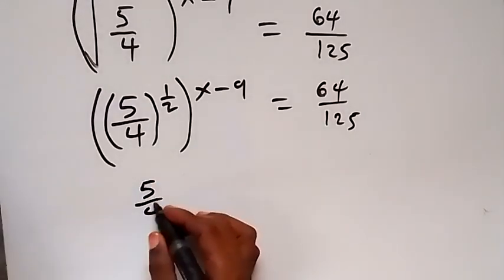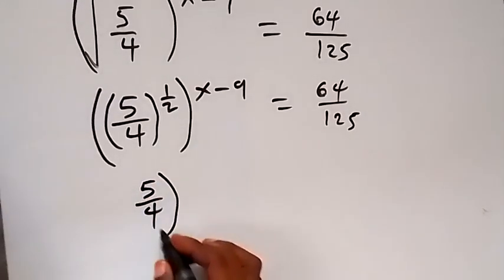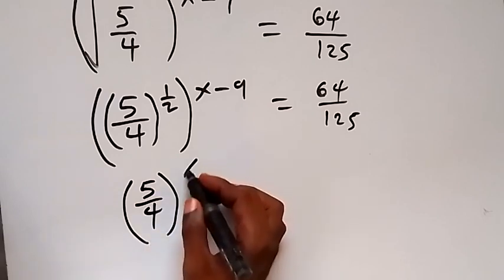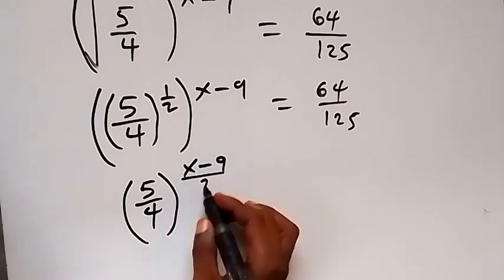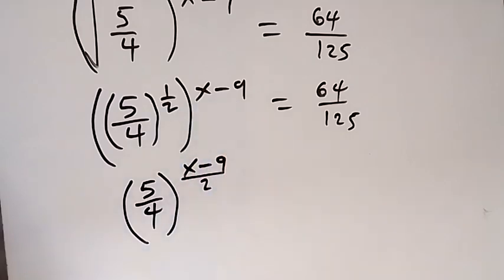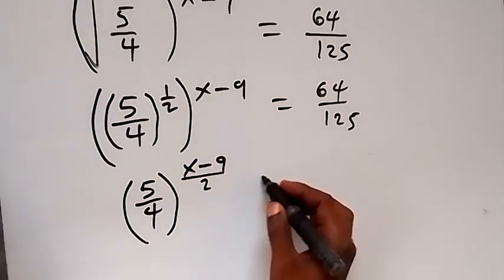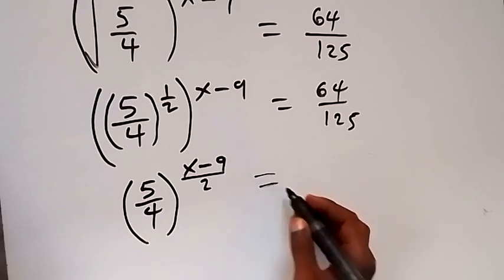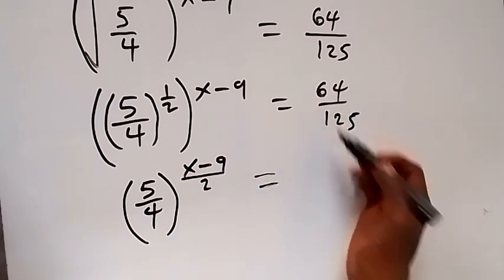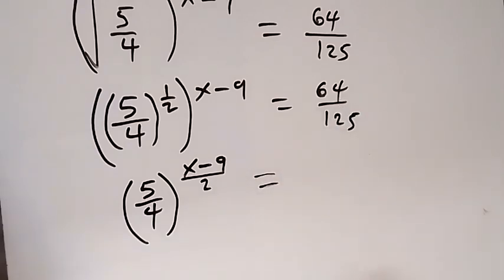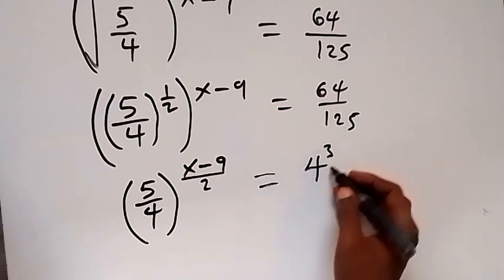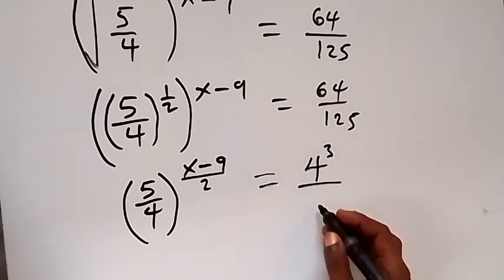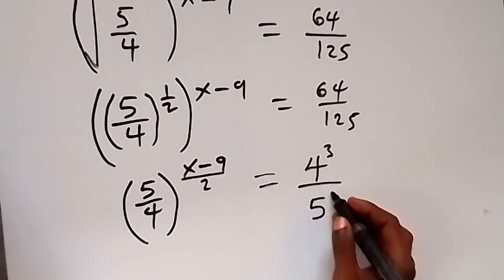So when half multiplies x minus 9, we have x minus 9 over 2, then equals to — from here we can change 64 as 4 raised to power 3, and change 125 as 5 raised to power 3.